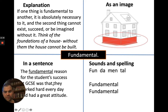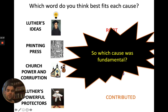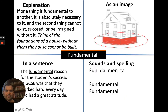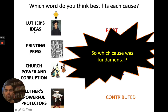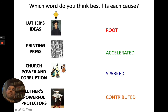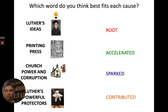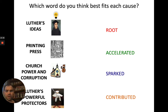For example: 'The fundamental reason for the student's GCSE success was that they worked very hard every day and had a great attitude.' There might be all kinds of contributing reasons — good teachers, good habits — but the fundamental one was working hard. Now think about which causal word goes best with each cause of the Reformation. Maybe the church's power and corruption was the root, because that's what led to Luther criticising the church and to his powerful protectors wanting to support him. What role would you say the printing press played — did it accelerate, spark, or contribute?